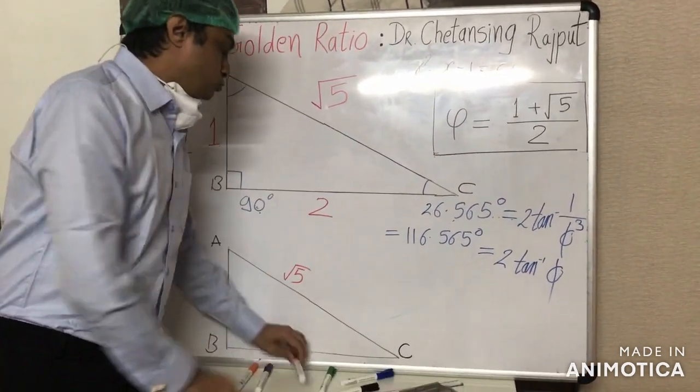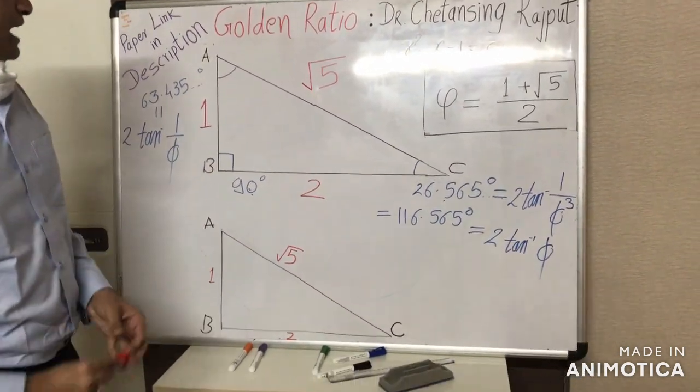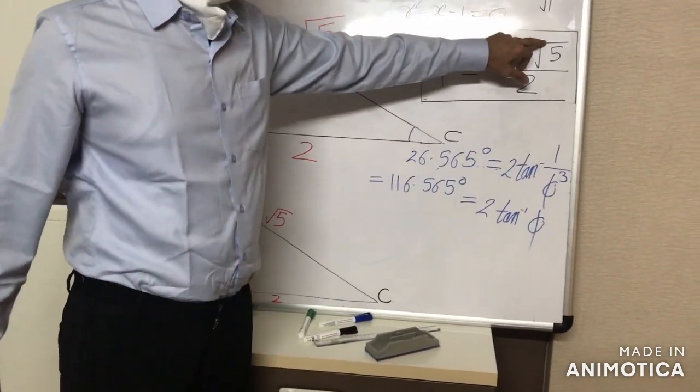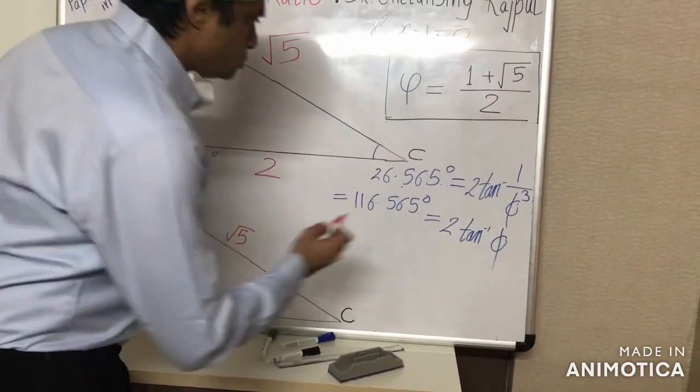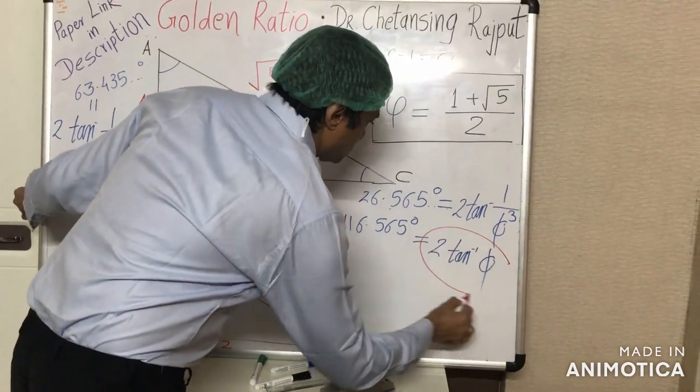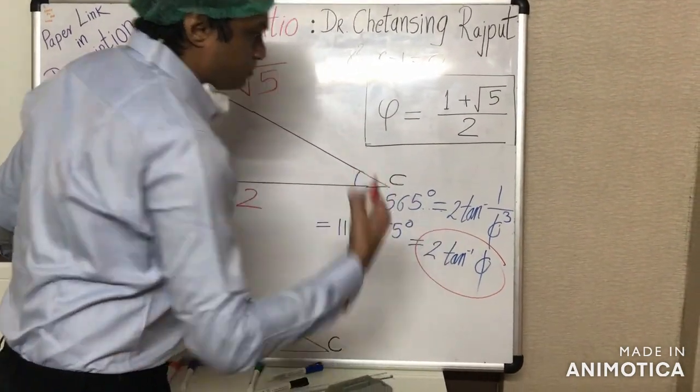Now look at the two figures. The angles against 1 and root 5 sides, they add up to arc tangent of golden ratio, twice of that.